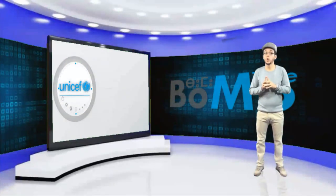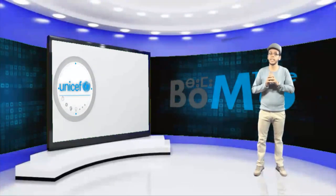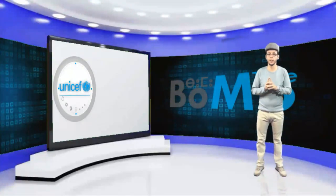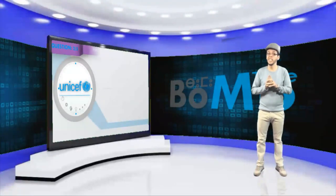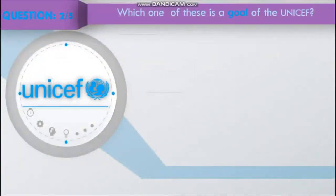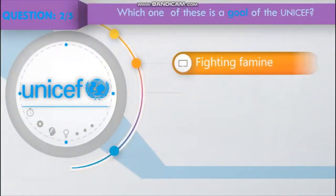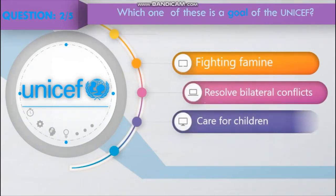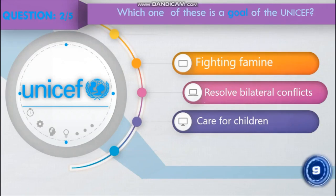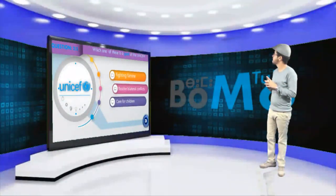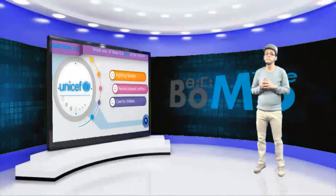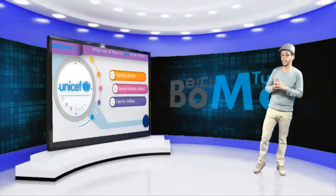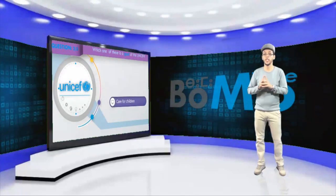Question 2: UNICEF works in more than 190 countries around the world. Which one of these is the goal of UNICEF? Fighting famine, resolve bilateral conflict, or care for children? The answer is to care for children.